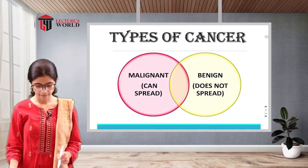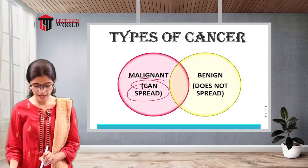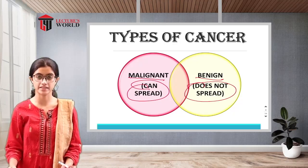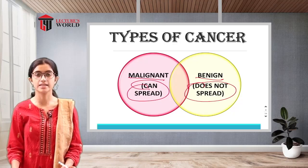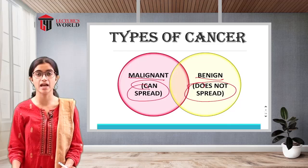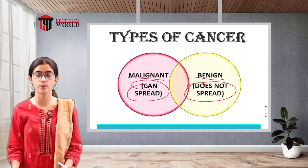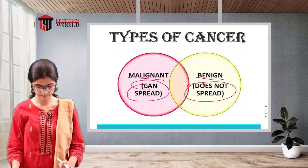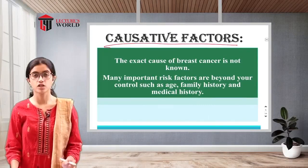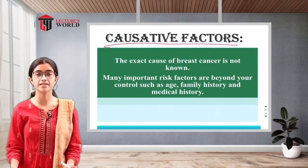There are two types of cancer: malignant, which can spread, and benign, which does not spread. Based on whether the cancer is malignant or benign, the treatment is selected accordingly. The patient's health prognosis also depends on whether the cancer is benign or malignant. Now let's look at the causative factors for breast cancer.